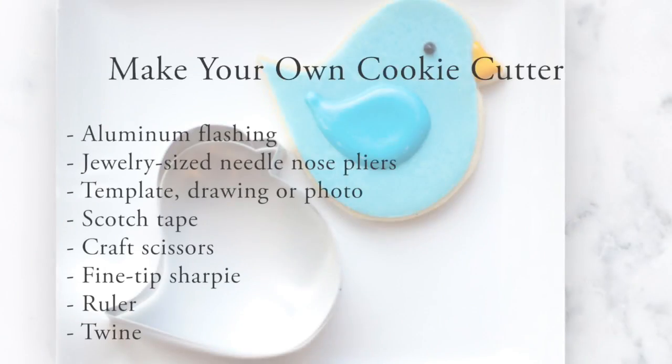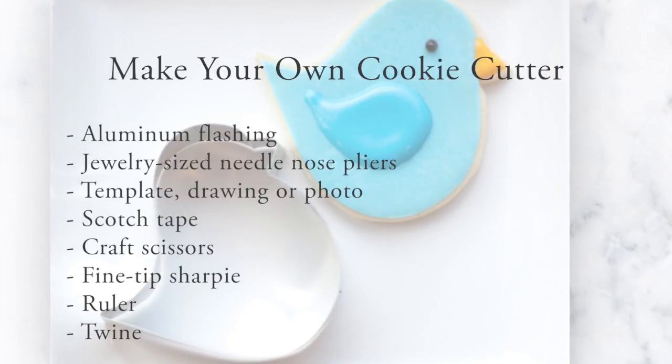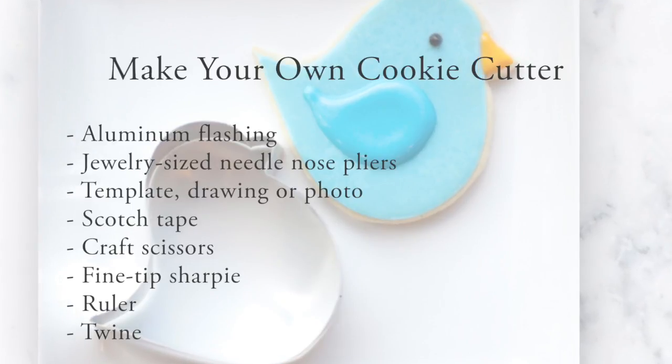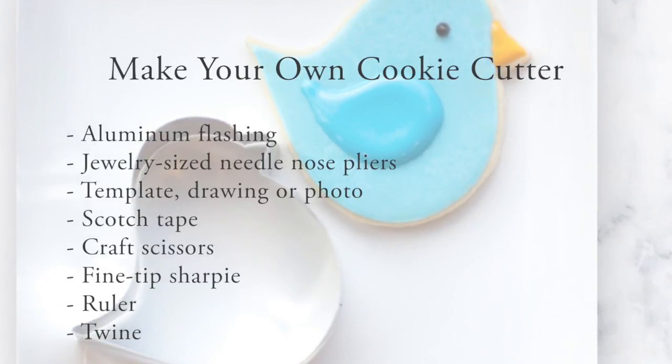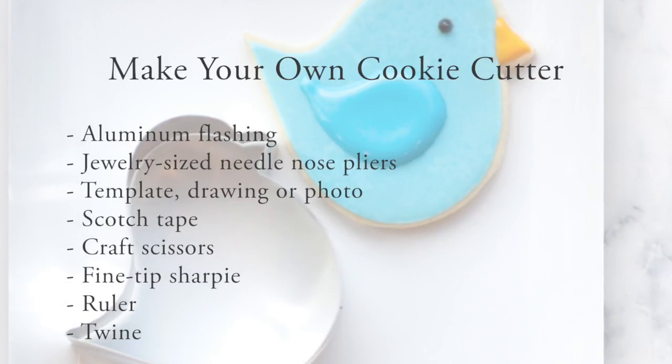To make your own cookie cutters, you'll need aluminum flashing. I found mine at Home Depot. It was only a dollar for a long piece that will make several cookie cutters. You'll also need jewelry size needle nose pliers, a template, drawing or photo in which you base your cookie cutter, scotch tape, craft scissors, a fine tip sharpie, a ruler and twine.